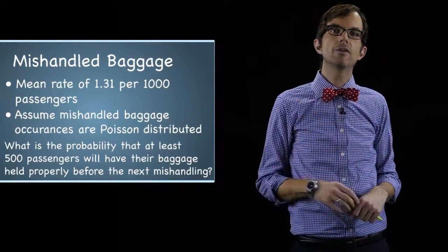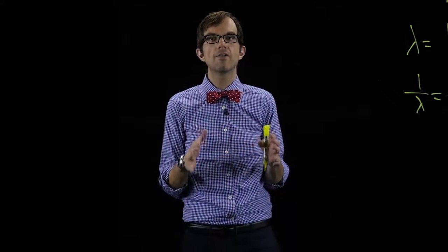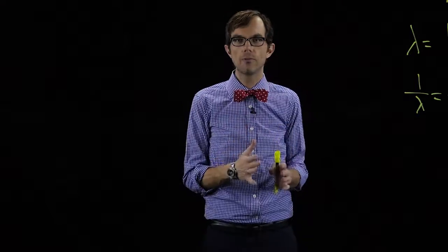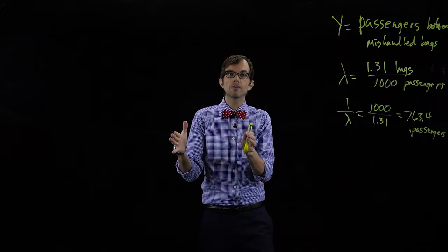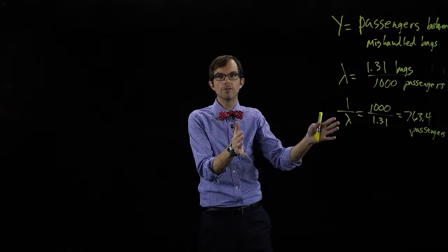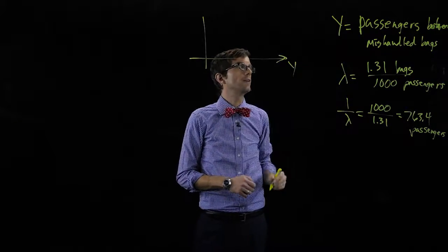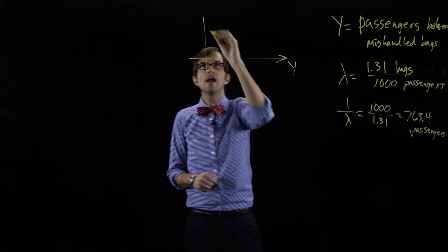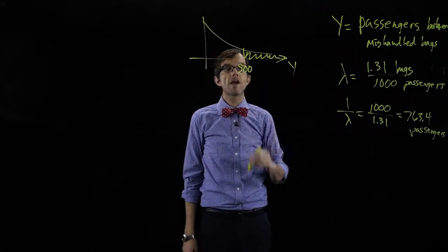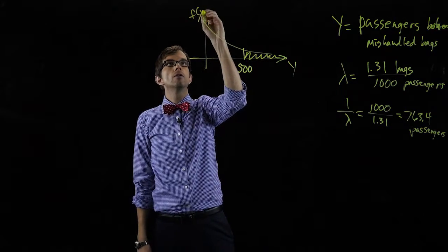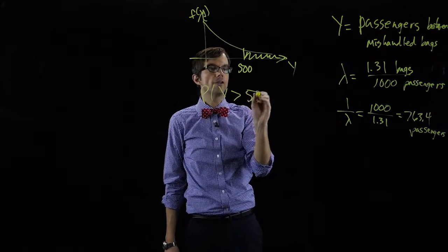Now let's take a look at some probability problems. What's the probability that at least 500 passengers will have their baggage handled properly before the next mishandling? In other words, what's the probability that there's not a mishandled bag in the first 500 passengers — that we have to wait until after 500 passengers to see a mishandled bag? Let's draw a picture. Here we have random variable Y, the number of passengers between mishandled bags. This is our PDF and we want the area representing the probability that Y is greater than 500.